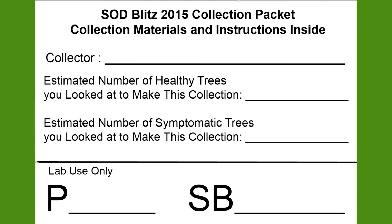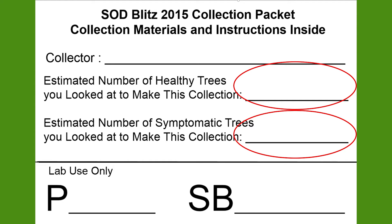Most people collect symptomatic leaves from 4 to 20 trees on a single trip. However, you will be looking at many more trees during your walk to survey for Sudden Oak Death. As you walk, please write down the number of trees that didn't show any symptoms and the number of trees that did have symptoms, including the ones you sampled. At the end of your collection trip, on the front of the packet, write down how many healthy trees you looked at and how many trees with symptoms — referring to bay laurels or tan oaks.